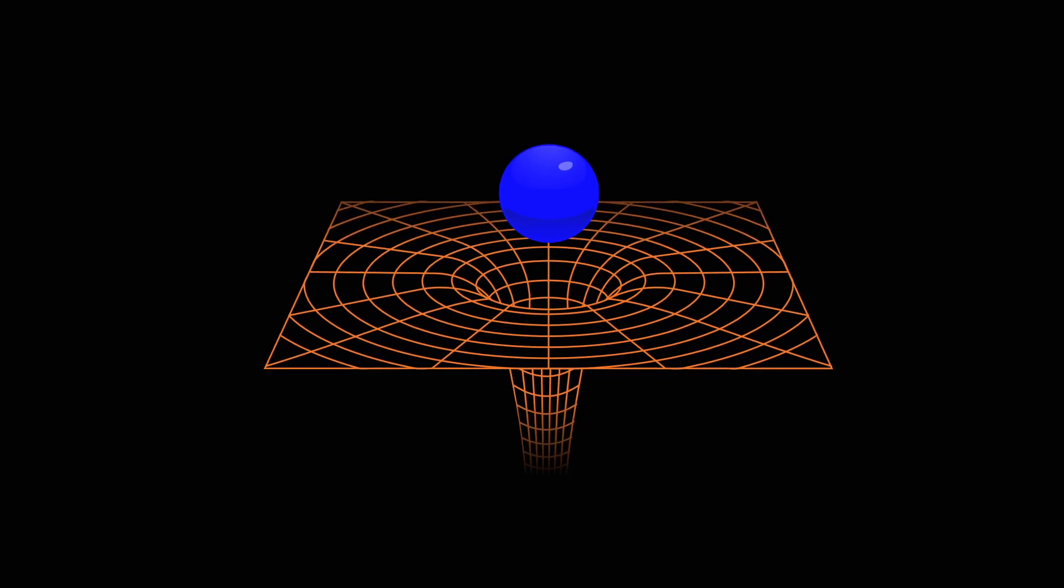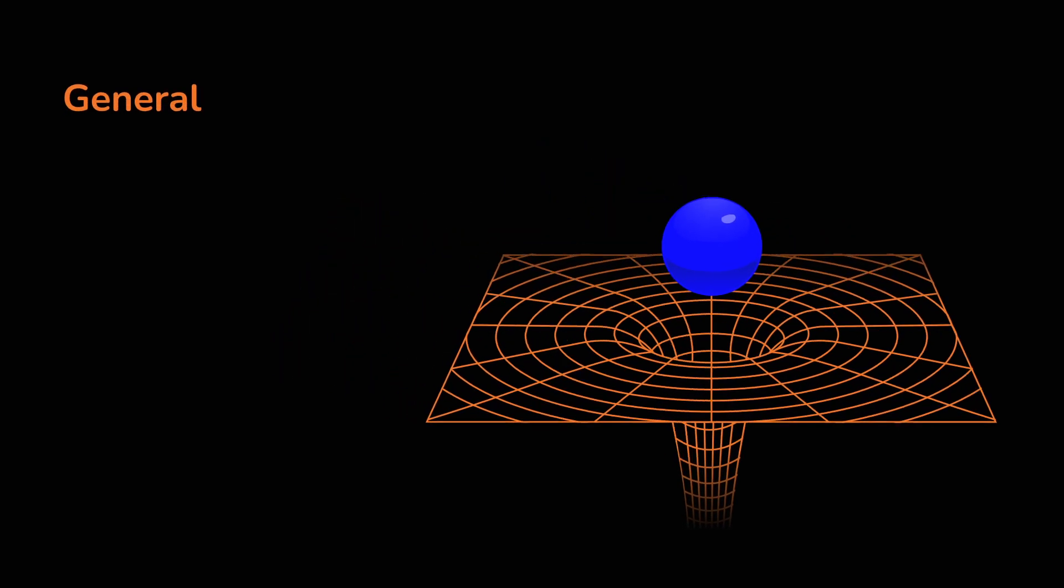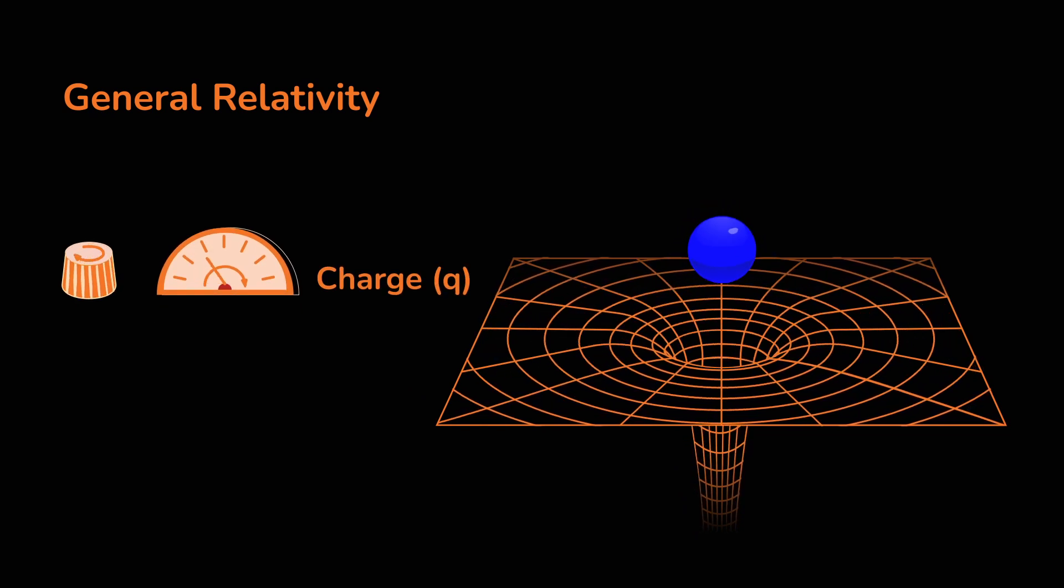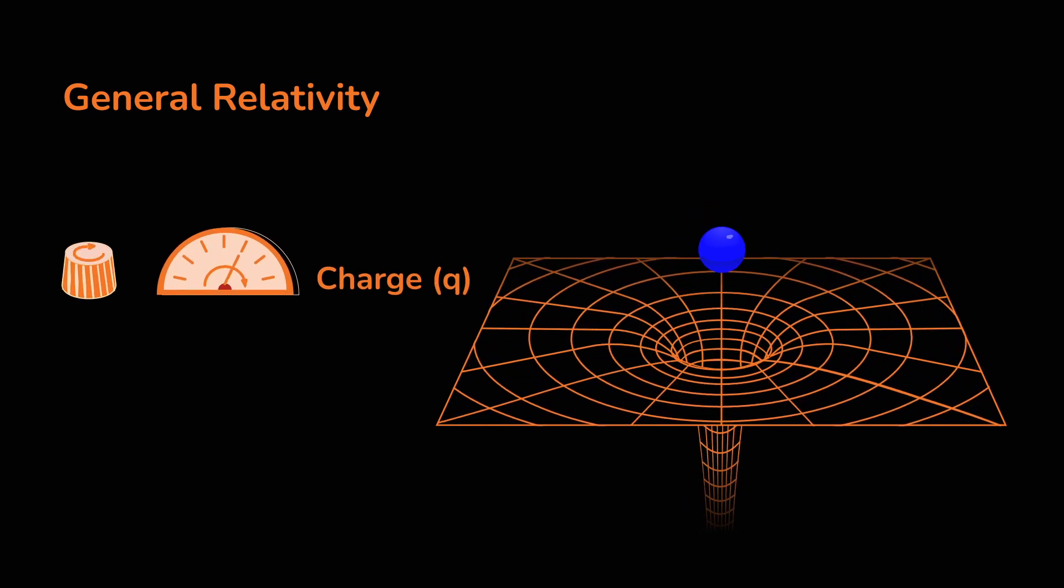Black holes are a striking prediction of Einstein's theory of general relativity. They are characterized by spherical event horizons and highly curved spacetimes.